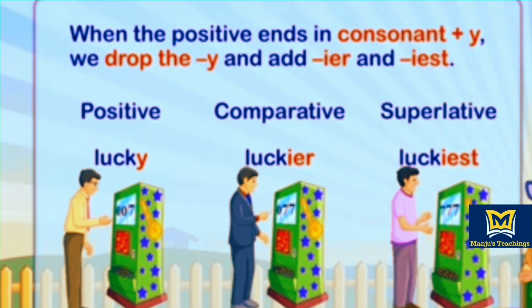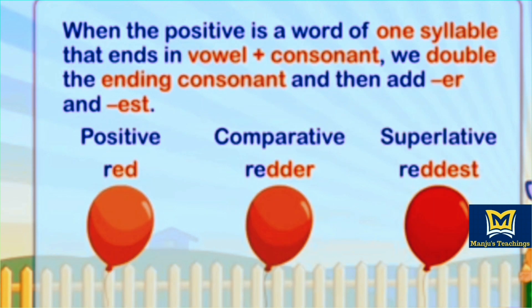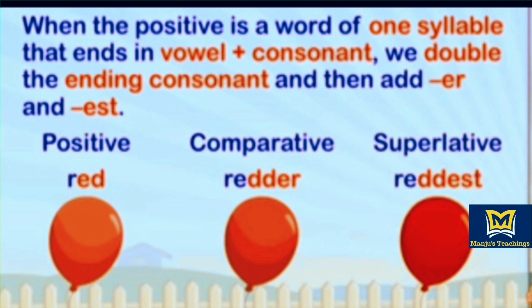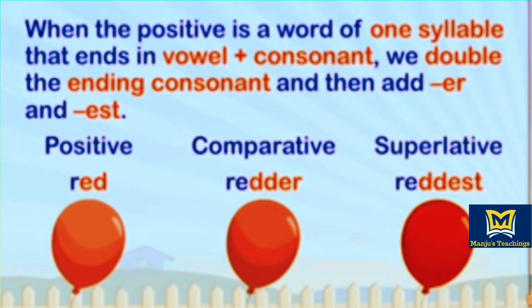When the positive ends in consonant Y, we drop Y. Example: lucky — add IER in comparative: luckier, and IEST in superlative: luckiest. When the positive is a word of one syllable that ends in vowel plus consonant, we double the ending consonant and then add ER and EST. Example: red, redder, reddest.